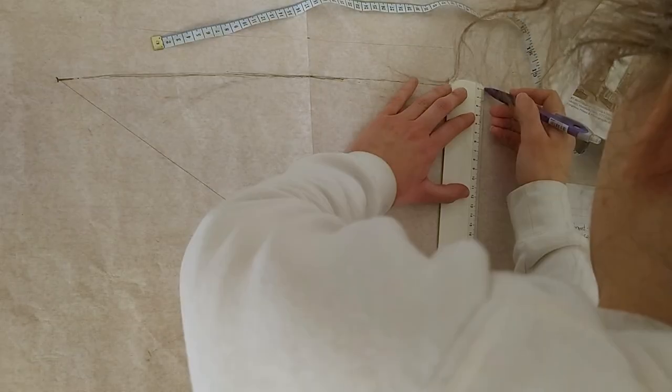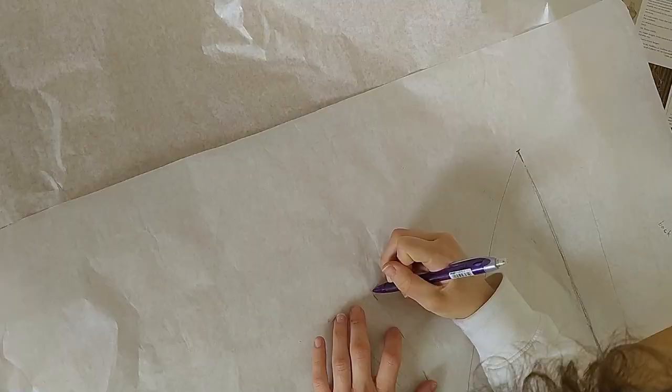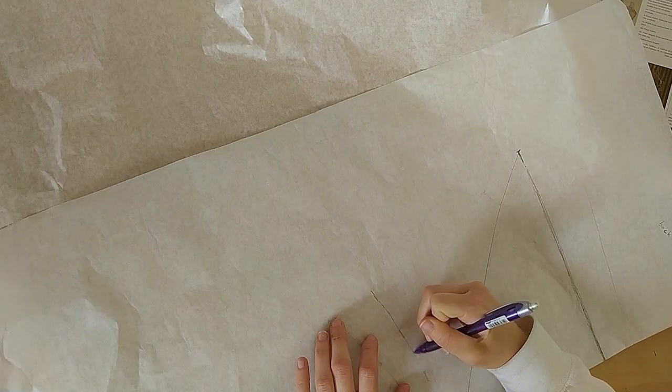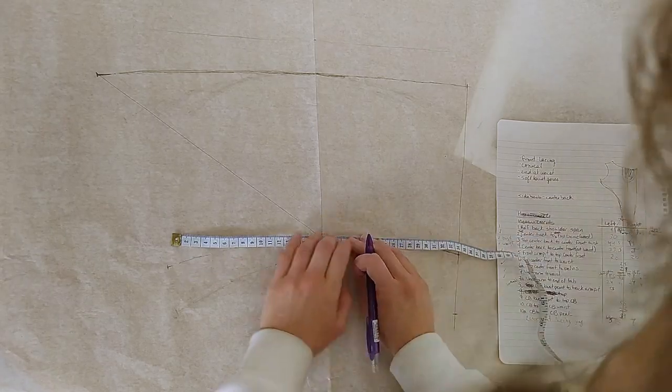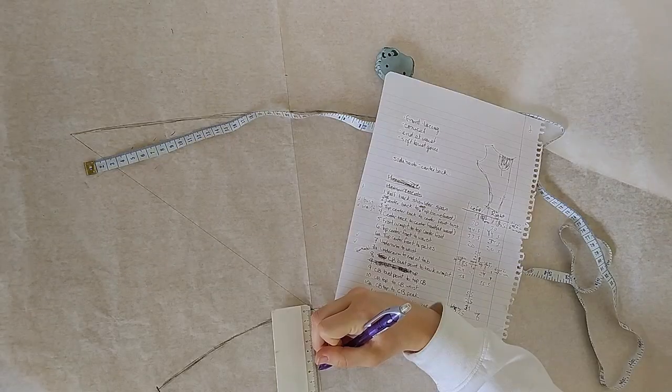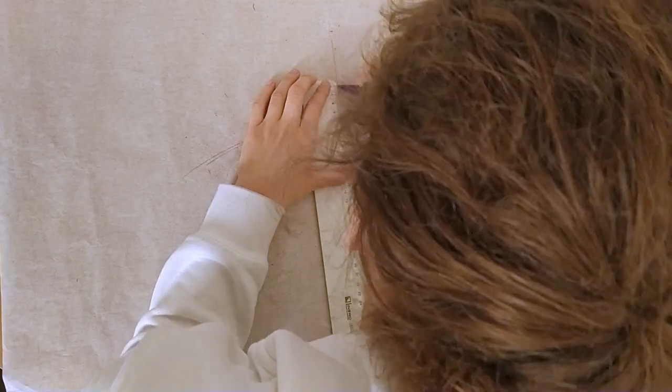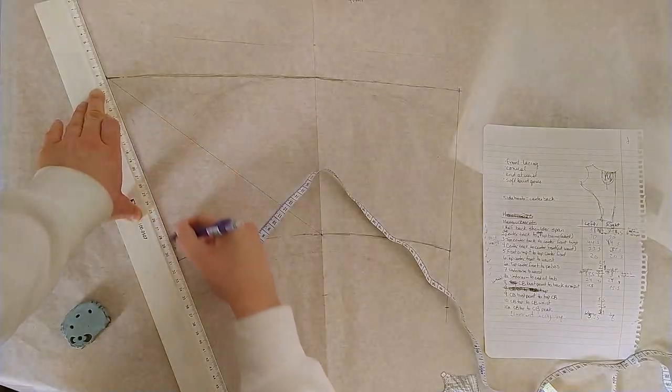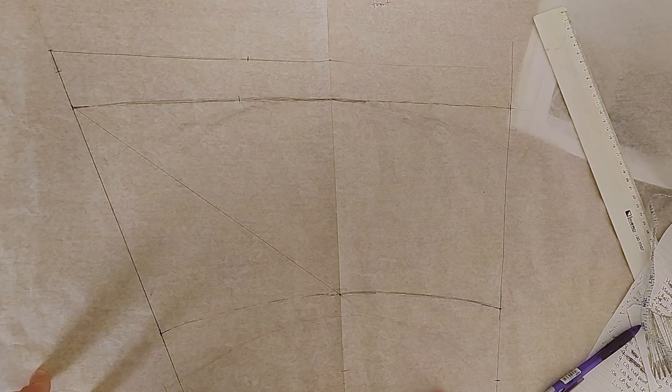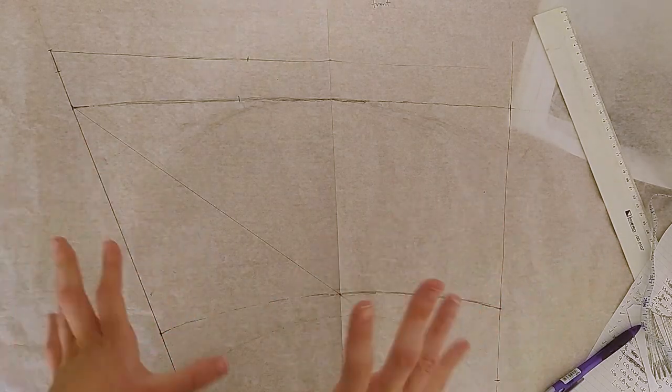And now draw out the center front line from the top to the bottom of the peak. And now the waist needs to be redrawn again, just making sure that waist measurement is still the same. And to measure to the end of the tabs. Now I measure up from the bust line to the armpit. And finally draw the center back line. And there we go, we have the bare bones of the pattern!